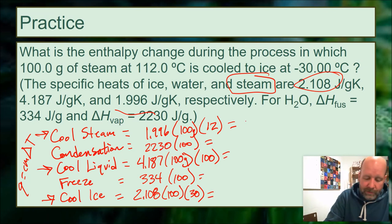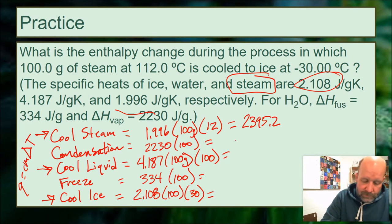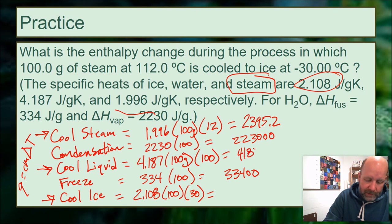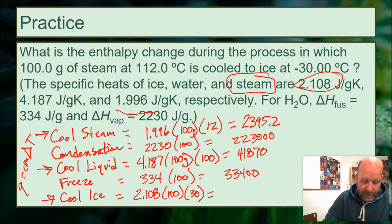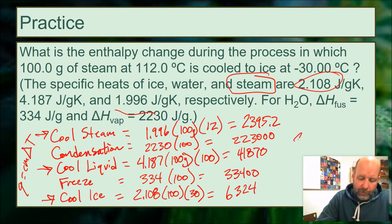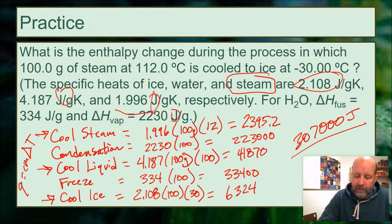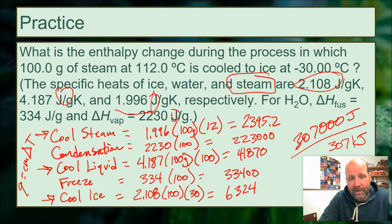Multiplying everything out gives approximate values: cooling steam ≈ 2,395 J; condensation = 223,000 J; cooling liquid = 41,870 J; freezing = 33,400 J; cooling ice = 6,324 J. Adding all together gives about 307,000 joules — or 307 kilojoules, or 3.07 × 10⁵ joules. Everything was in joules and grams so units are consistent.